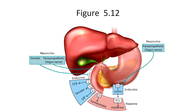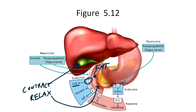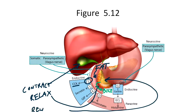Here again is figure 5.12 from your text. When fat enters the duodenum, the I cells are stimulated to release CCK. CCK will then stimulate the gallbladder to contract and cause relaxation of the sphincter of Oddi, allowing bile to enter the duodenum. CCK will also stimulate the pancreas to release pancreatic enzymes such as lipase. CCK will also decrease gastric emptying, slowing new entry of chyme from the stomach to the duodenum so the enzymes have enough time to digest the fats.